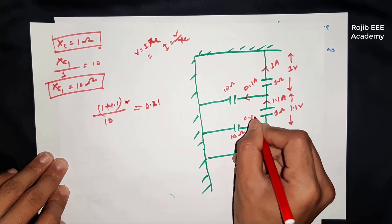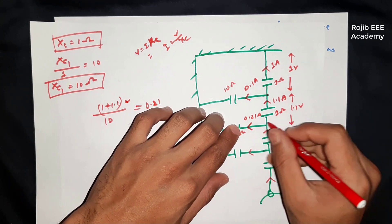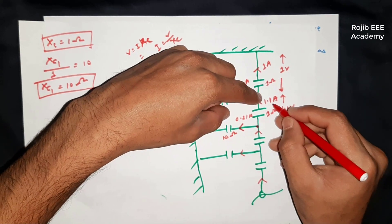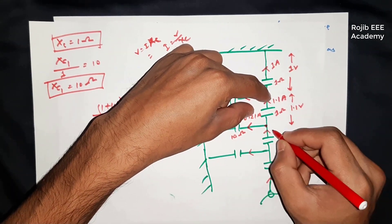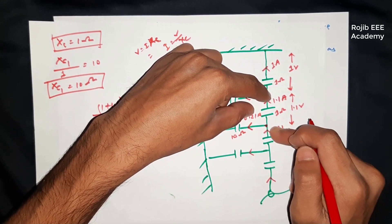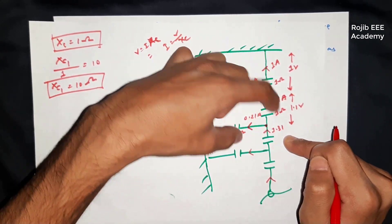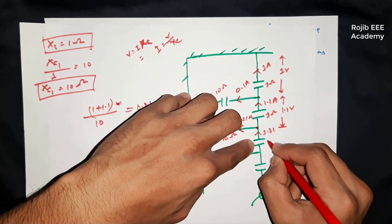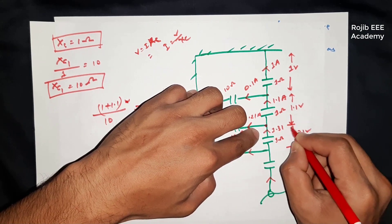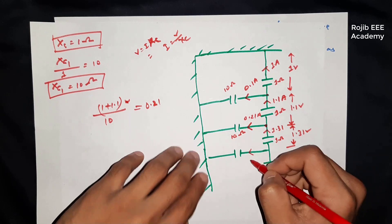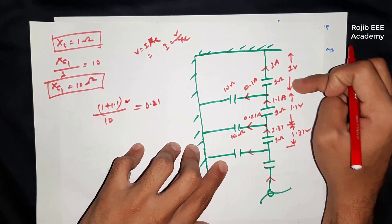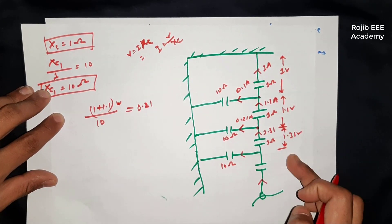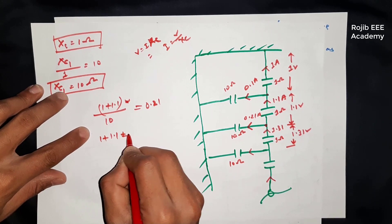Similarly, the current into the third insulator is 1.1 plus 0.21 equals 1.31 ampere. The voltage drop V3 equals I into XC equals 1.31 into 1 equals 1.31 volt. So V3 is 1.31 volts.